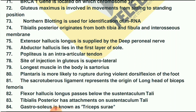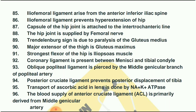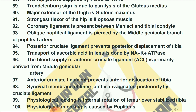Gastrosoleus is known as triceps surae. The iliofemoral ligament arises from the anterior inferior iliac spine. The iliofemoral ligament prevents hyperextension of the hip. The capsule of the hip is attached to the intertrochanteric line. The hip joint is supplied by the femoral nerve. Trendelenburg sign is due to paralysis of gluteus medius. The major extensor of the thigh is gluteus maximus.